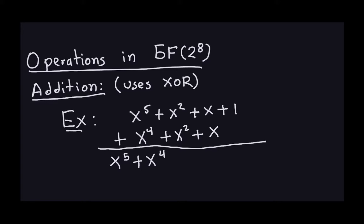Now I go to x squared. X squared plus x squared means we're adding coefficients: one plus one. But remember, the addition here is XOR, so one XOR one is zero. Because of that, x squared plus x squared equals zero x squared — it cancels out. Basically what's happening is that same powers cancel each other out: if you add a power to itself, you just get zero and the term disappears.